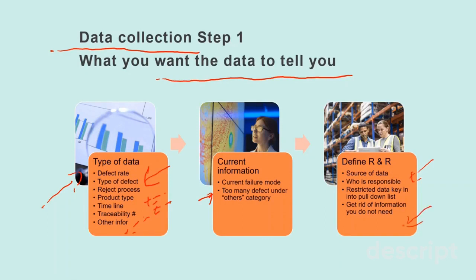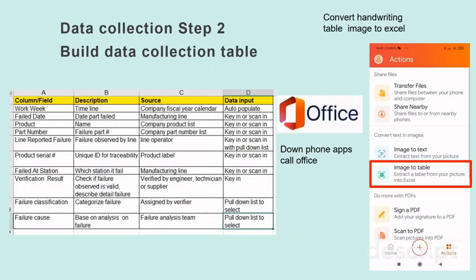Get rid of information you do not require. For example, if you want to collect data showing the reject rate of an SMD line and what are the top failure symptoms and failure causes — which could be process-related, handling, or incoming materials — then you must create a table according to what you want. You will need to put in all the information as column headings or fields. If you have a more automated data collection process, a table will eventually be pulled and become a data table.